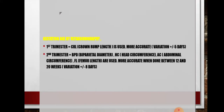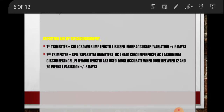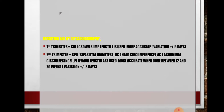In the second trimester — months 4, 5, and 6 — if scanning is done, we need to know the biparietal diameter, head circumference, abdominal circumference, and femur length of the fetus. This calculation is most accurate when done between 12 and 20 weeks, with a variation of plus or minus 8 days. In the third trimester — months 7, 8, and 9 — gestational age calculation by scanning is less reliable, with a variation of plus or minus 16 days. So we usually calculate gestational age in the first and second trimester.